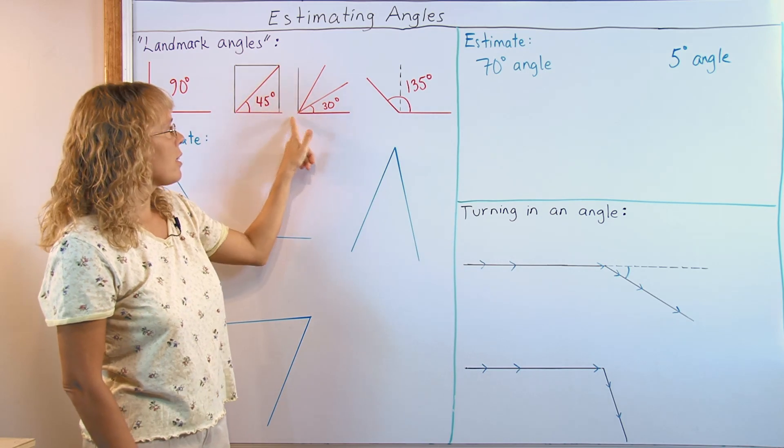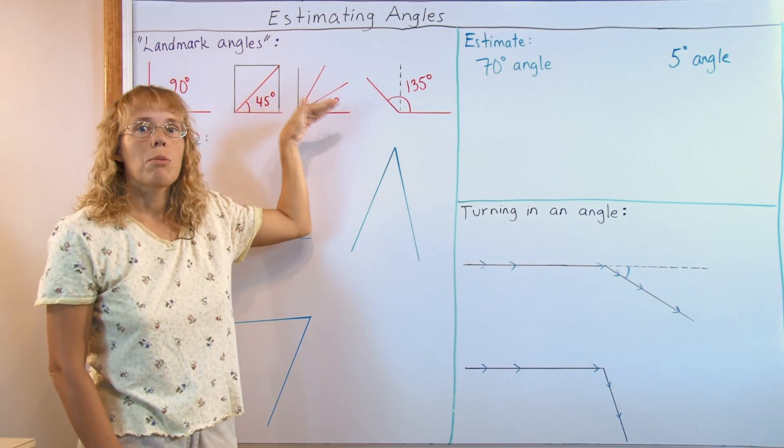And here's a 30 degree angle, which we get if we have 90 degrees and we divide it in three parts, three equal parts.